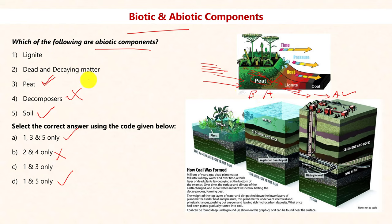So, the answer for which of the following are abiotic components — we should not have peat (option 3) in the answer. We can eliminate option A, and the right answer is option D.